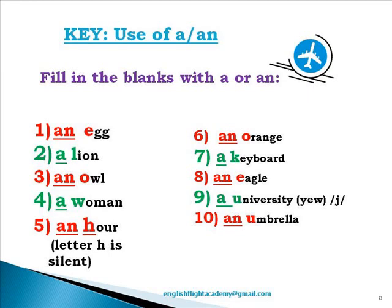A university — although the first letter 'u' is a vowel, it is not pronounced with a vowel sound. The 'u' in 'university' is pronounced with a long 'u' sound, which sounds like 'yew', written as 'j' in the phonetic alphabet. Although the first letter is a vowel, it does not have a vowel sound. We therefore say 'a university'.